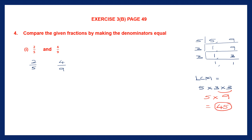5 nines are 45. So 45 is our LCM and we're going to use this as the new common denominator. The denominator for both fractions is now 45. 5 has become 45, so multiply 2 also by 9: 2 nines are 18. For the second fraction, 9 into 5 is 45, so multiply 4 also by 5: 4 fives are 20. We get the fractions 18 by 45 and 20 by 45.